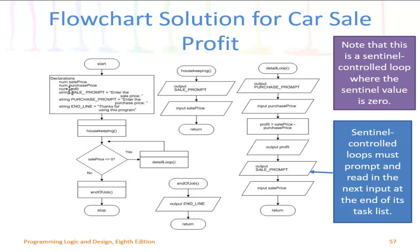So we have a sale price and a purchase price. We're also going to calculate a profit, so we need a spot to store that data during the duration of the program — a numeric variable for profit. That's how we came up with those three. There are also three constants being used for the prompts we'll see later in the program, as well as the 'thanks for using this program' message at the end. That declaration happens first, typically after the start.